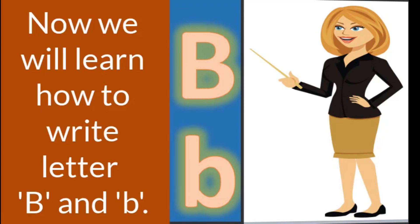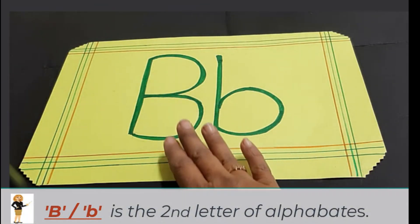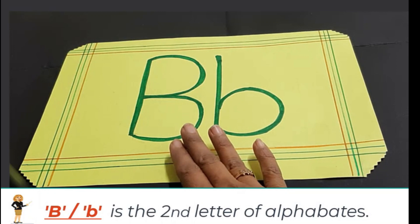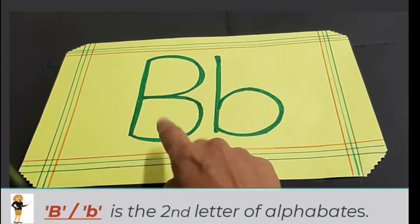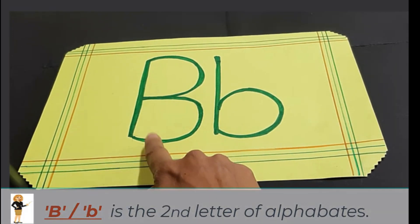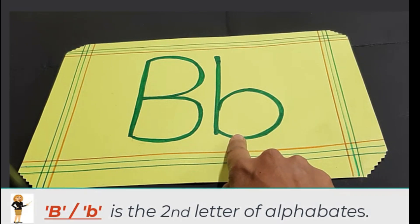Now we will learn how to write letter B and b. This is letter B. This is B and this is b.